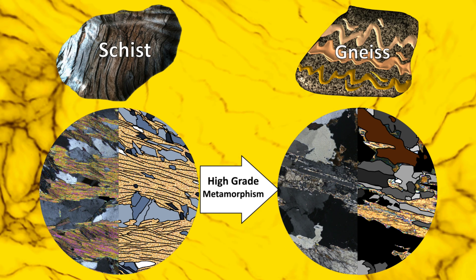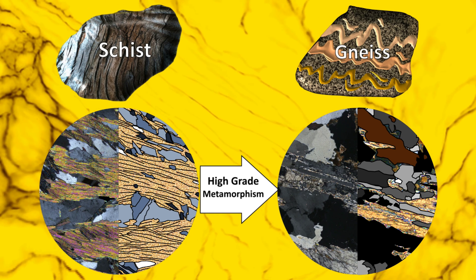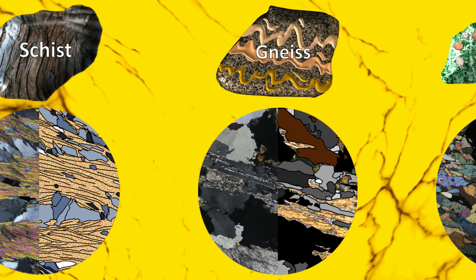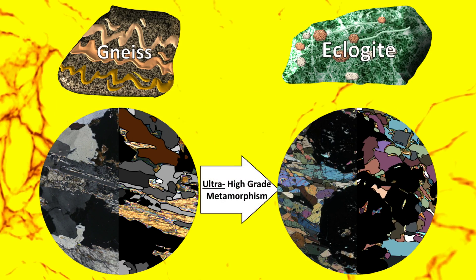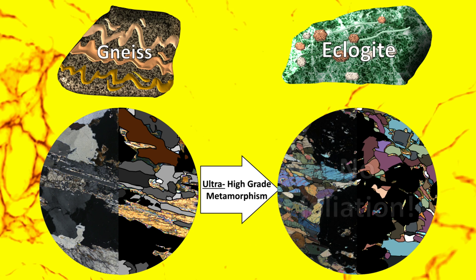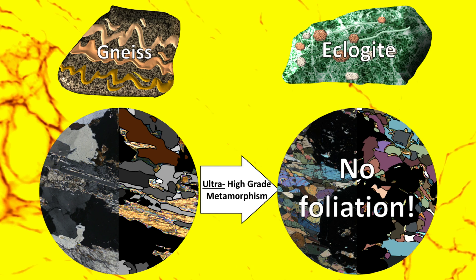As we moved up from low-grade into mid-grade, we saw universal foliation. But at the higher degrees of metamorphism, the conditions are so extreme that the crystals begin to lose their flattened appearance. We get rocks like eclogite, whose thin section looks more like an igneous rock than metamorphic. Really no foliation here.